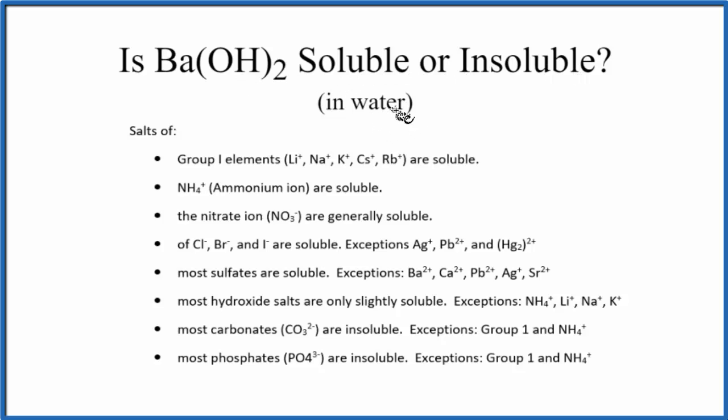This is a bit of a tricky one. So let's first look at the solubility rules here. If we look down the solubility rules, the most relevant one is that most hydroxide salts are only slightly soluble. And these are some exceptions, some group 1 elements and the ammonium ion, like ammonium hydroxide.